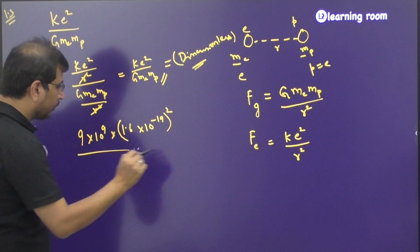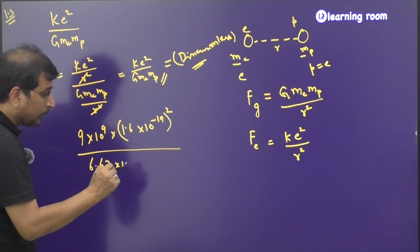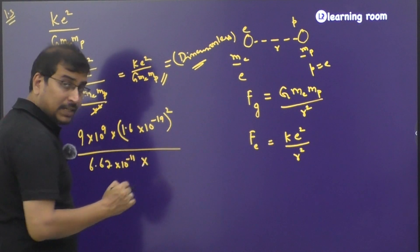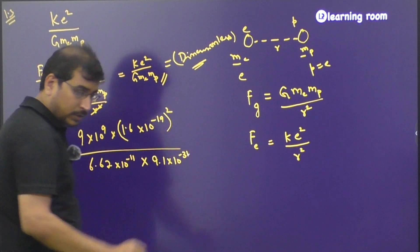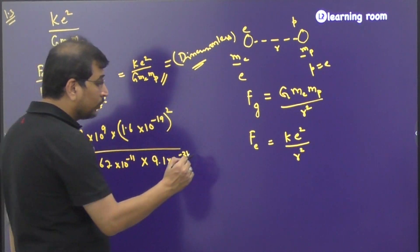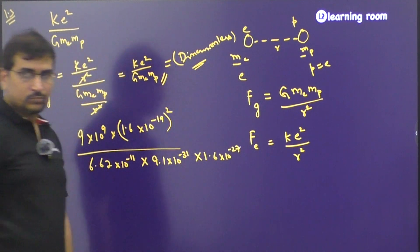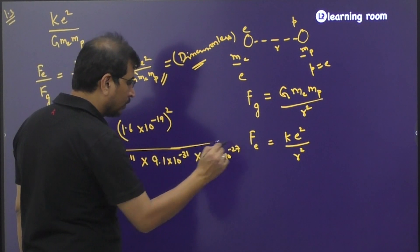Put a square around it divided by the gravitational constant is 6.67 × 10⁻¹¹, into mass of an electron is 9.1 × 10⁻³¹ and mass of a proton is 1.6 × 10⁻²⁷. These are all the values.